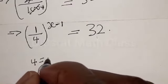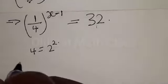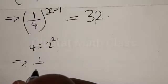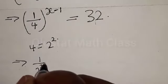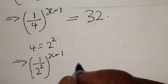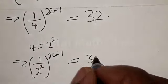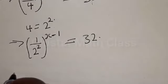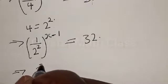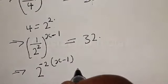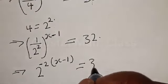Note that 4 is equal to 2 squared. Then this implies that 1 over 4 can be expressed as 1 over 2 squared, all raised to power s minus 1, equal to 32. This can be rewritten as 2 raised to power minus 2 into s minus 1, equal to 32.